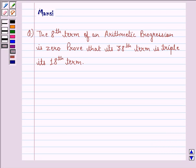Hi and welcome to the session. Let's work out the following question. The 8th term of an arithmetic progression is zero. Prove that its 38th term is triple its 18th term.